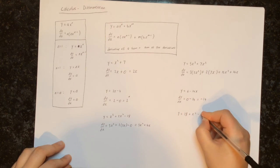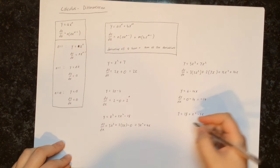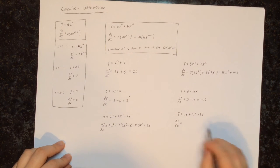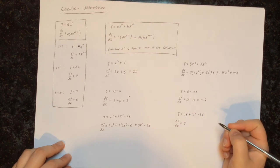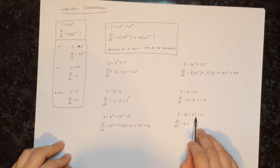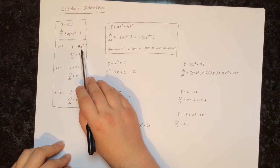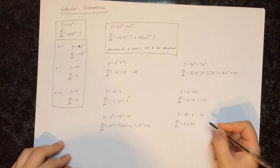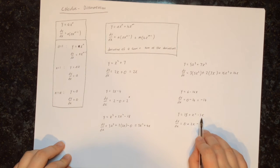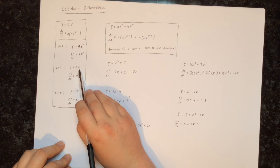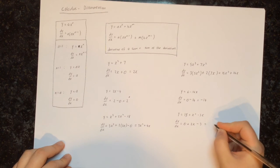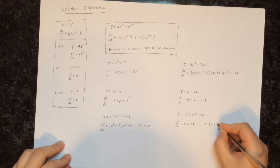Next let's try y equals 18 plus x squared minus 3x. To get the derivative we take the derivative of each part individually. First, 18 is just a number so the derivative is 0. Then plus x squared: multiply by the power and reduce the power by 1, giving 2x. Then minus the derivative of 3x, which is some number times x, so we're just left with 3. So dy/dx equals 2x minus 3.